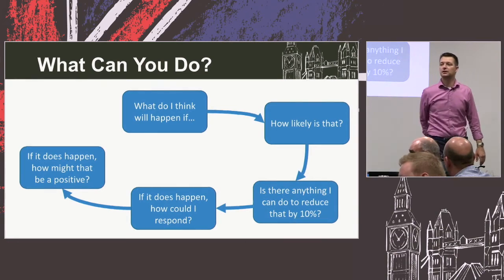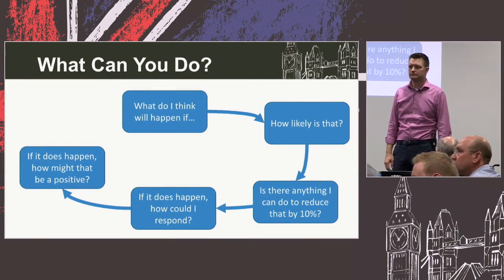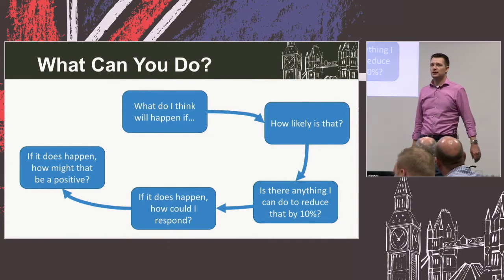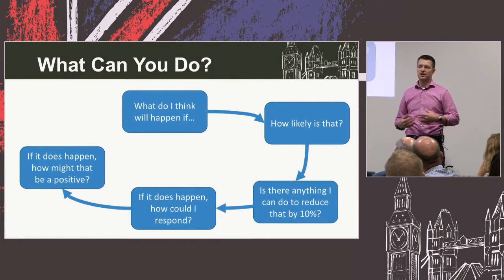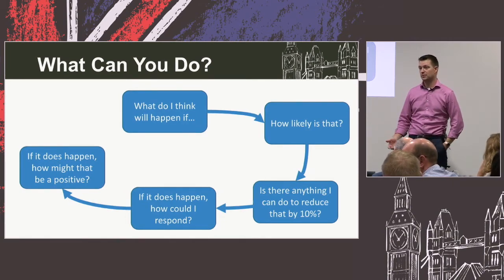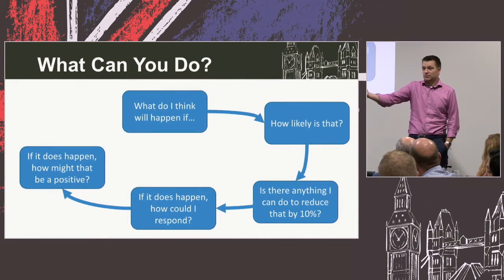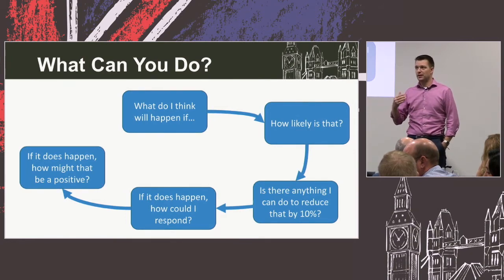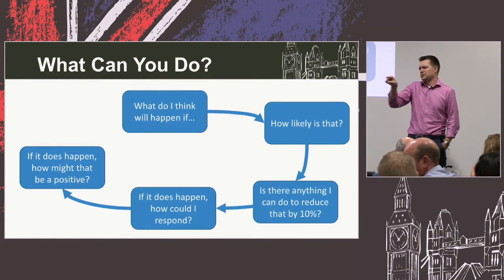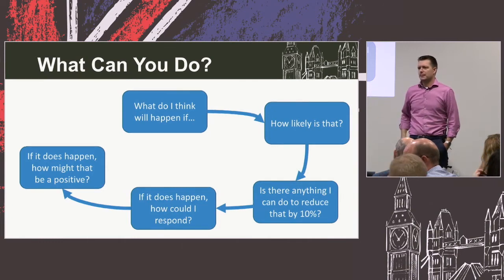Q: Where you notice these traits in others, what advice would you give to help them recognize and address them? A: It's not about me necessarily doing anything — it's helping them become aware of it if it's a problem for them. If things are working fine, why would they worry about it? Without being too cliche, the only thing you can really change is what's in the mirror. You can help by being that mirror if that's what they want, but I wouldn't go around saying 'I think you've got this going on — you should change that.' I don't have the right to do that.